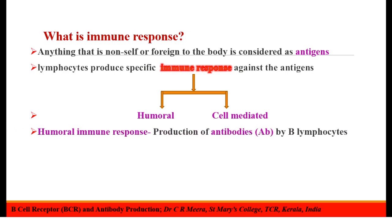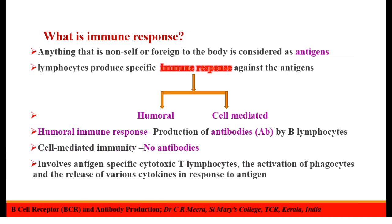Humoral immune response results in the production of antibodies by B-lymphocytes. Whereas cell-mediated immunity does not involve antibodies. Rather, it involves antigen-specific cytotoxic T-lymphocytes, the activation of phagocytes, and the release of various cytokines in response to antigens.